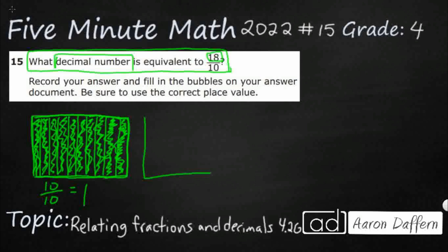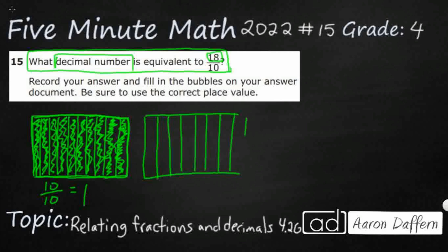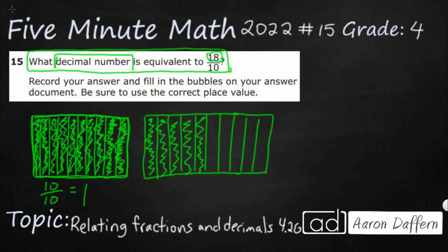So let's try this again. I'm going to draw another bar with ten sections and shade in eight of them, because I've already gotten ten-tenths and I need eight more tenths: one-tenth, two-tenths, three-tenths, four-tenths, five-tenths, six-tenths, seven-tenths, eight-tenths. So this second bar represents eight-tenths.